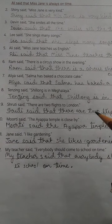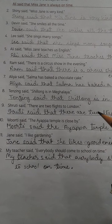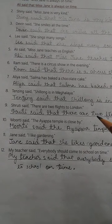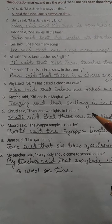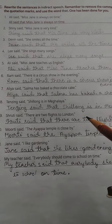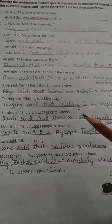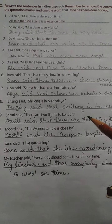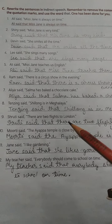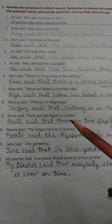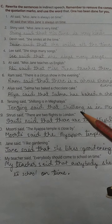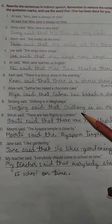Please try to listen to the question carefully and write the answer with correct spelling. Aap question ko sunke samajke, sahih spelling ke saath answer likhne ki koshish karenge. The question is: rewrite the sentence in indirect speech. Remember to remove the comma and the quotation marks and use the word 'that'. Yaha pe direct speech ko indirect speech mein likhna hai, aur comma aur quotation marks ko hatana hai, aur unki jagah 'that' ka istemal karna hai.